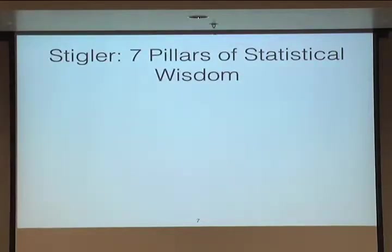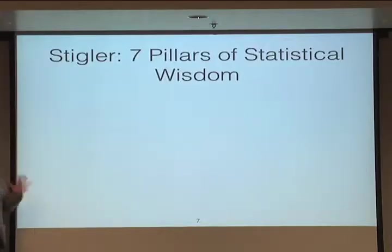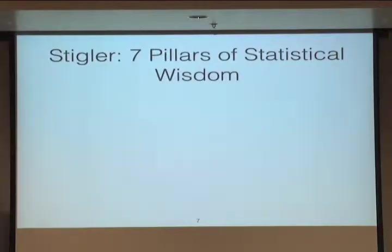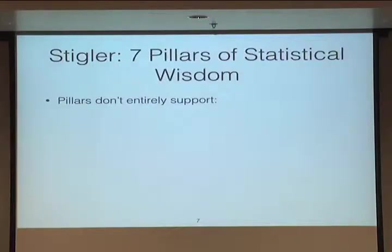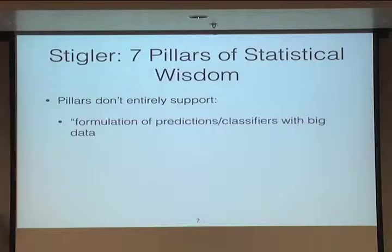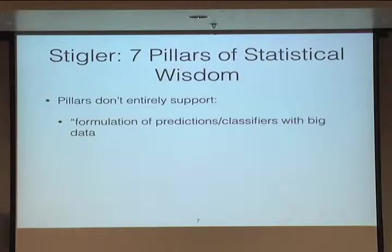Steven Stigler, a statistician and historian at the University of Chicago, has a wonderful book called 'The Seven Pillars of Statistical Wisdom.' He traces the seven major central themes of statistics back over 200 years. In his final chapter, he points out there are interesting problems now that the pillars don't entirely support. The first is the formulation of predictions and classifiers in big data — meaning the curse of dimensionality: when you have many variables, your data set has very sparse categories. A challenging problem.